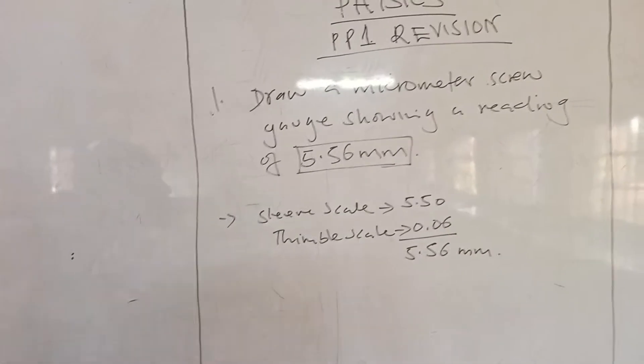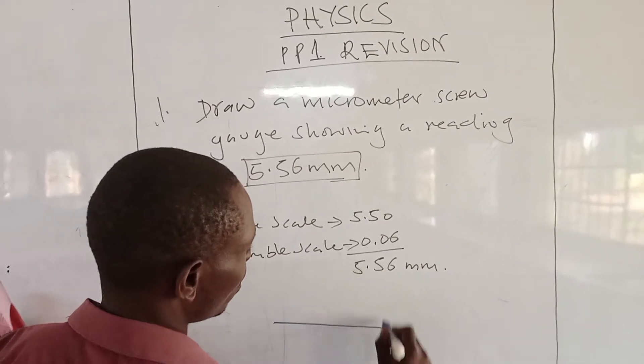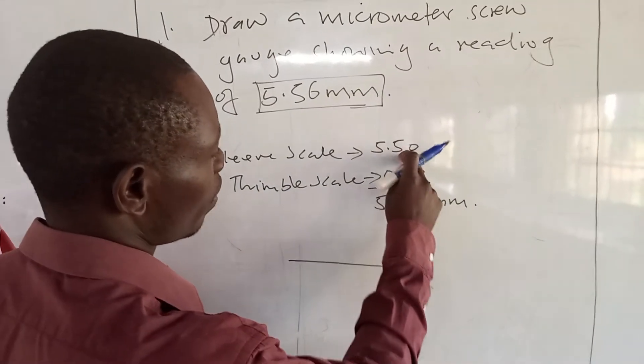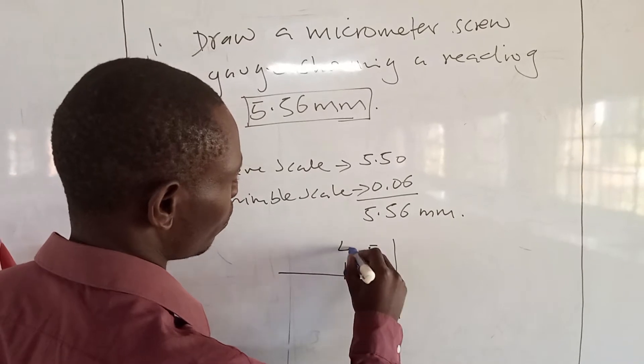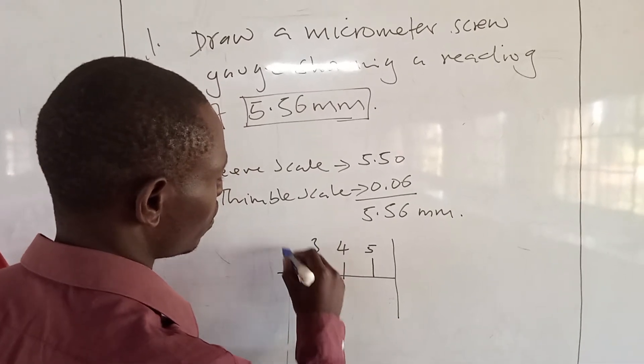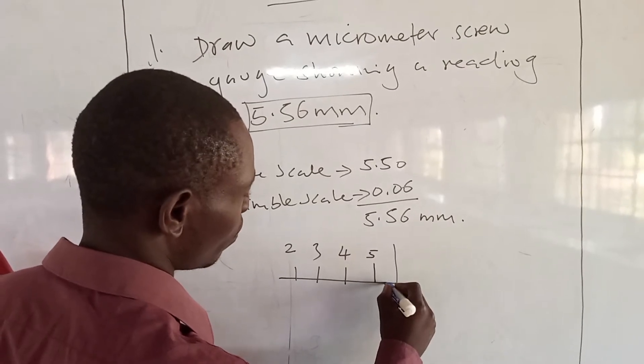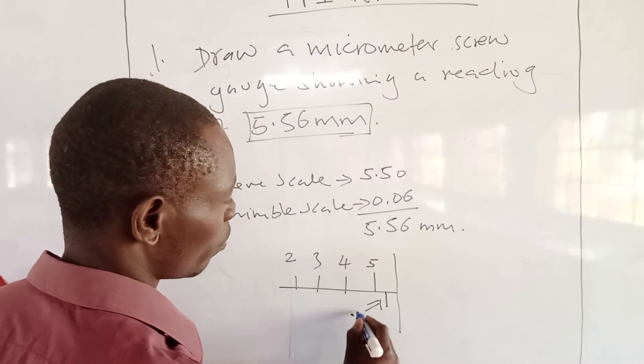Now for this, we'll draw our sleeve scale to have 5.5, meaning on the upper side we'll have 5, 4, 3, 2 like that. But then 0.5 is a small mark or subdivision on the lower side, so this one here is 0.5.